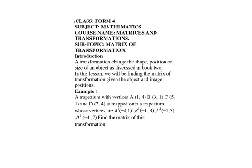In this lesson we will be finding the matrix of transformation given the object and image positions. For example, we are told that a trapezium with vertices A(1,4), B(3,1), C(5,1) and D(7,4) is mapped onto a trapezium whose vertices are given. We are expected to find the matrix of this transformation. So this is how we proceed.